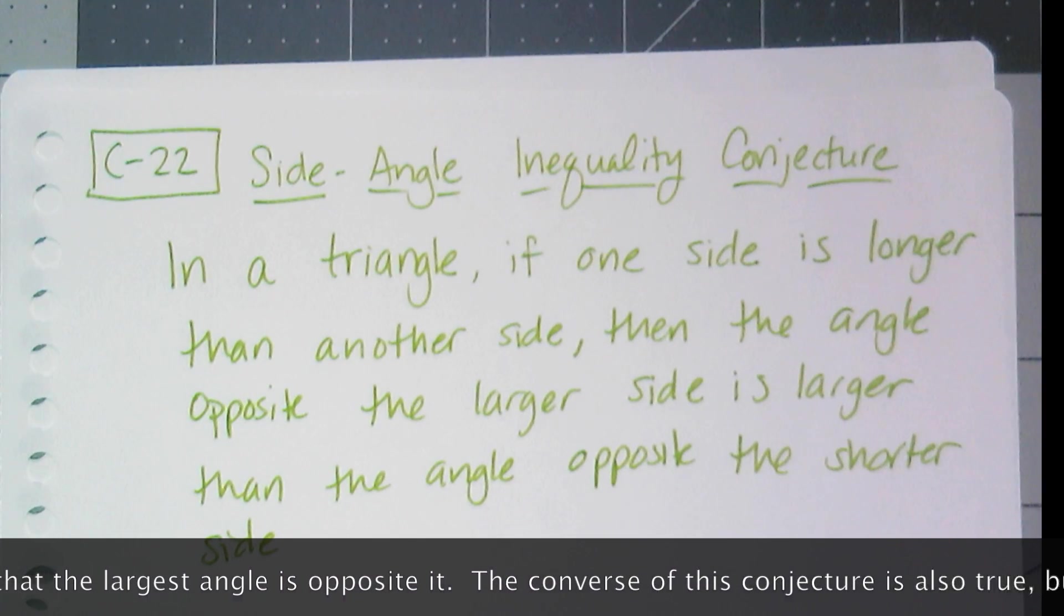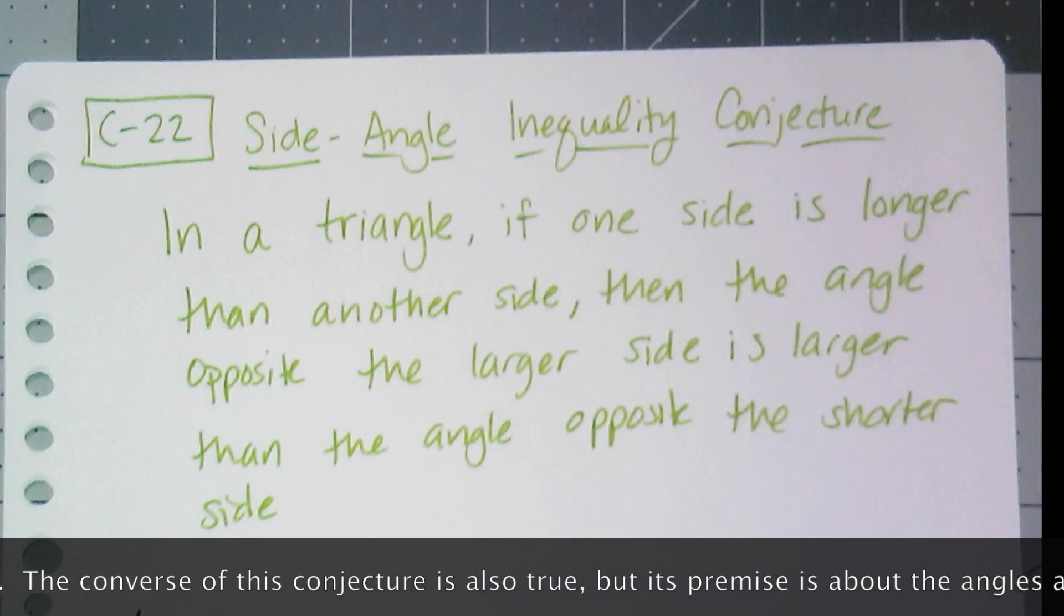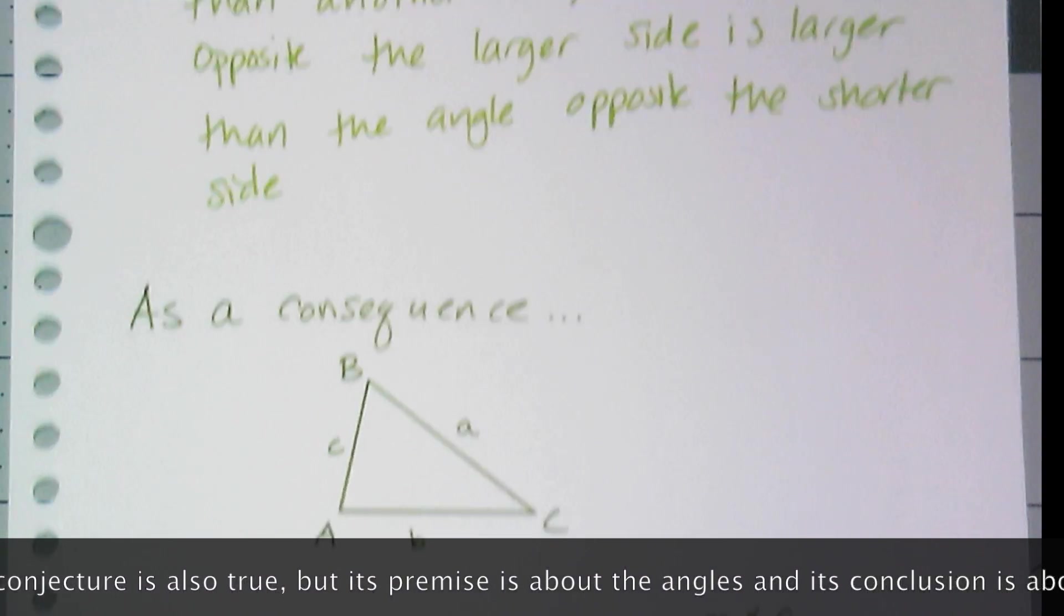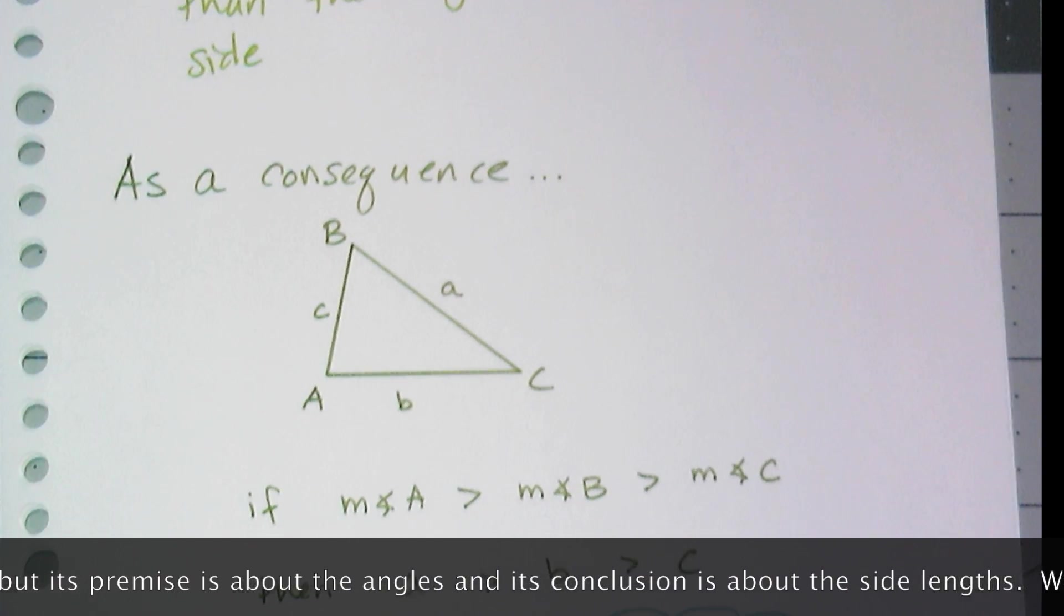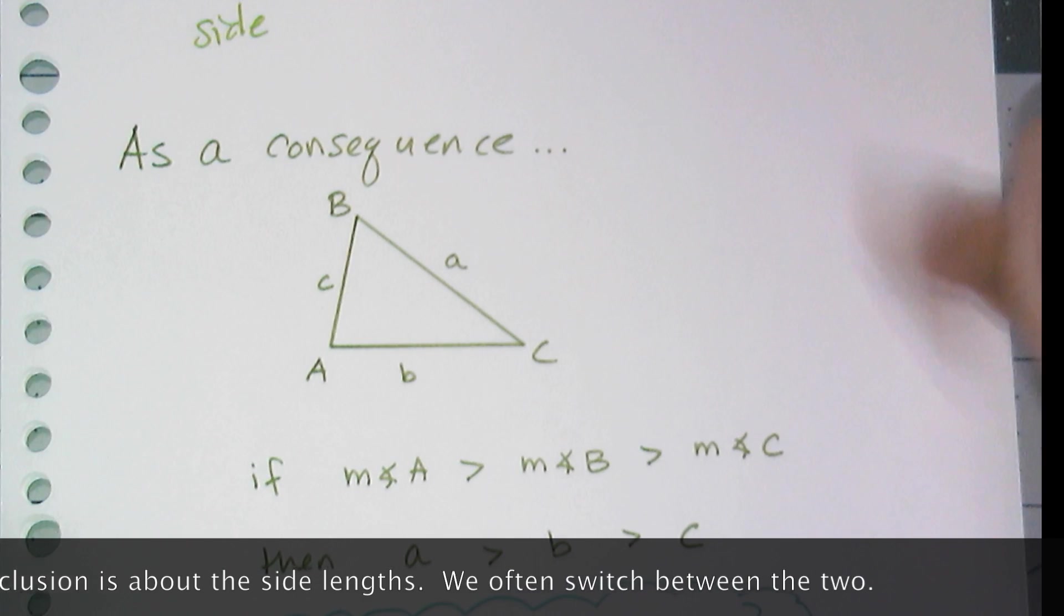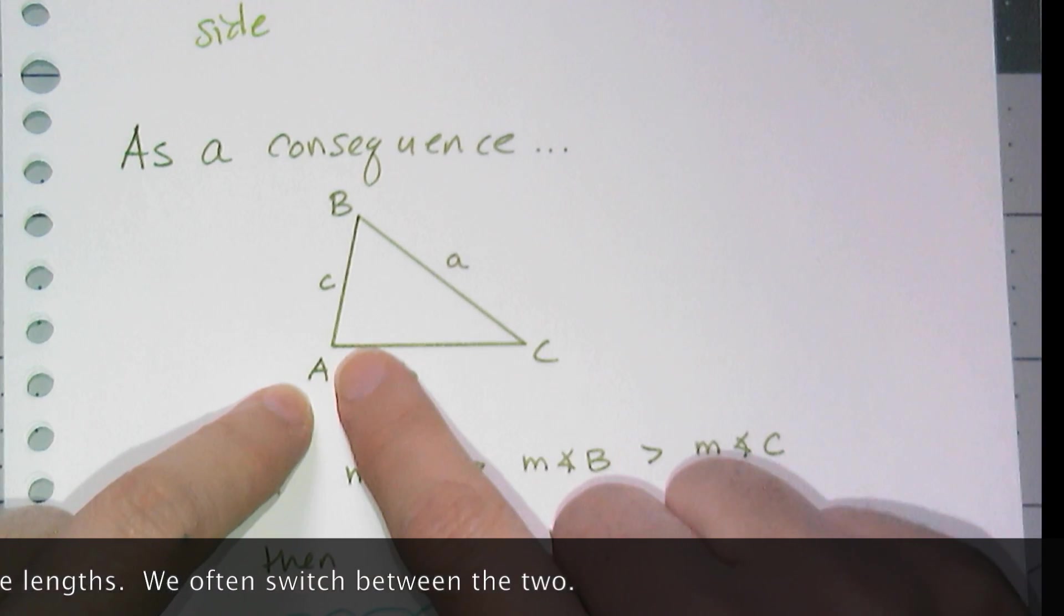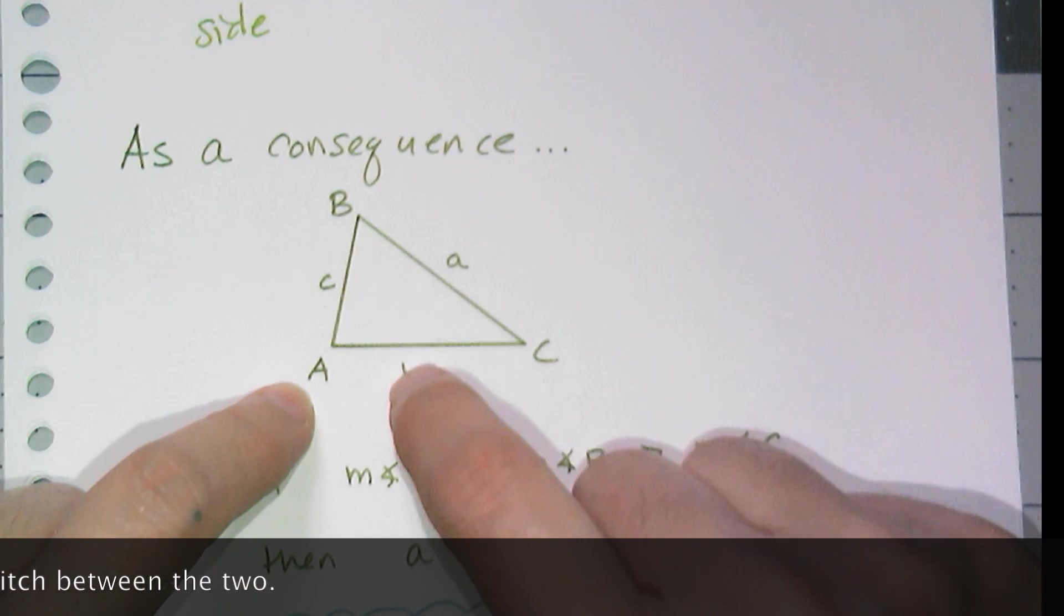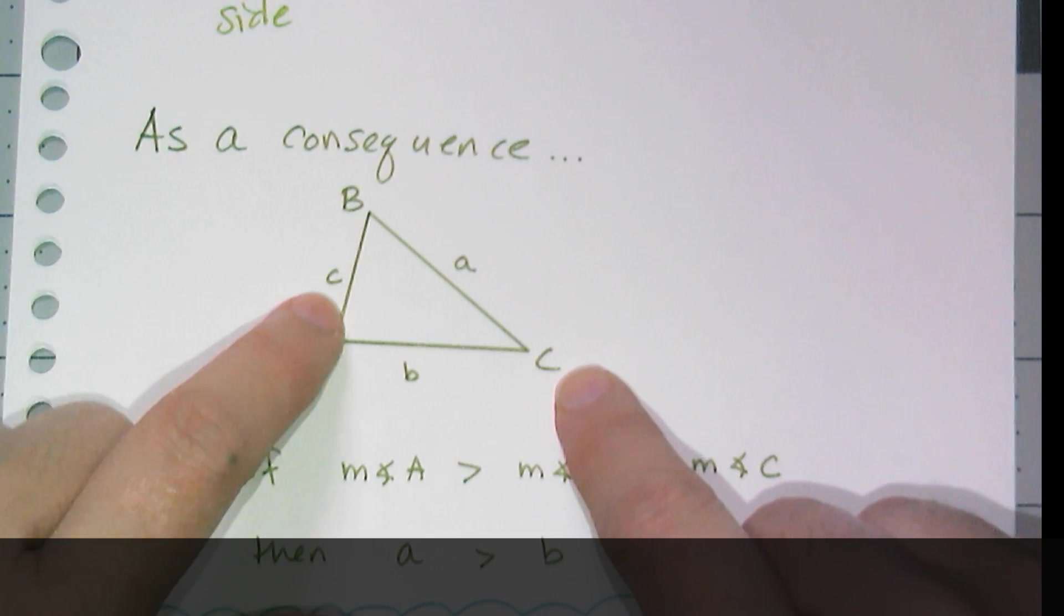And so as a consequence of this conjecture, I can create something like this. I can actually relate all three sides of the triangle. So side A is opposite angle A, side B is opposite angle B, and side C is opposite angle C.